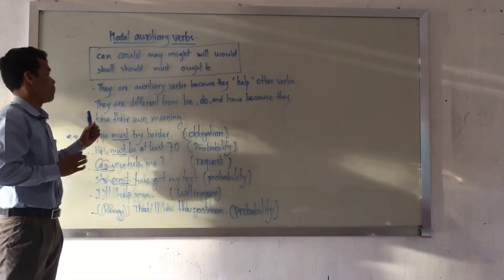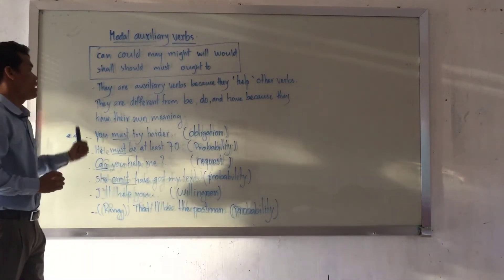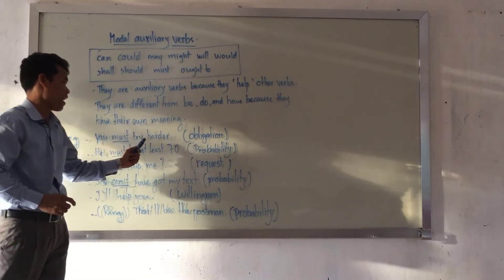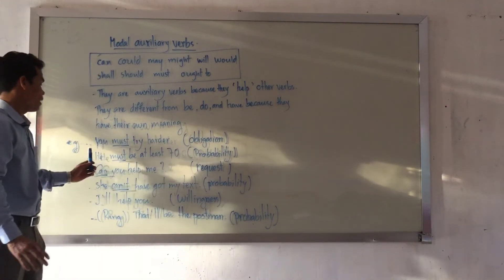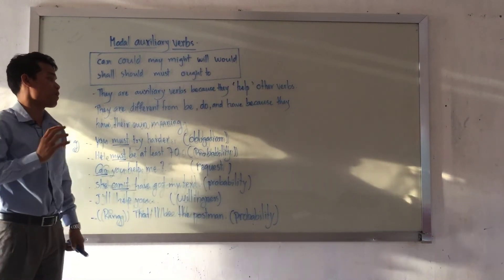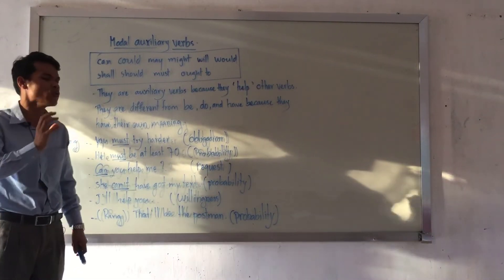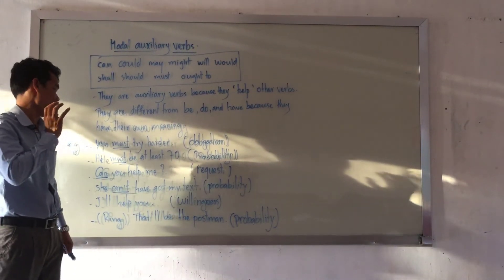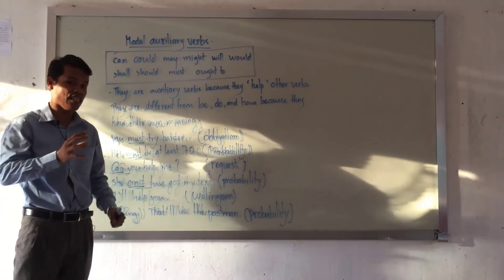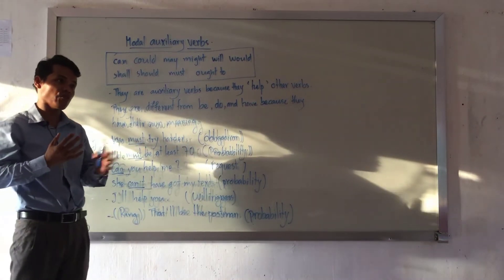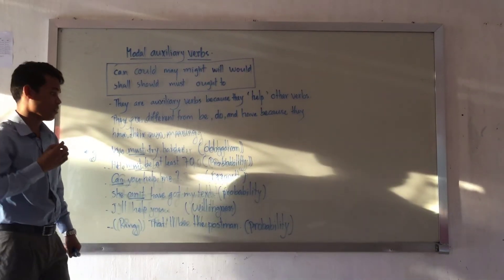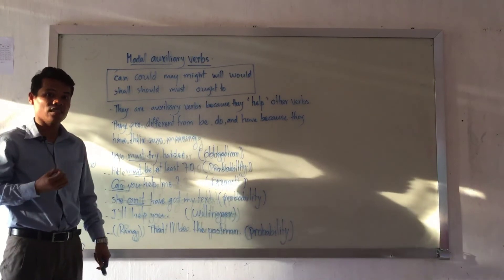When we use modal auxiliary verbs, they can be added before the main verb, and they have their own meaning. 'You must try harder' refers to obligation. 'He must be at least 70' is not obligation but probability — you are not sure exactly how old he is, so you say he must be at least 70. You have some evidence, but it is not 100% certain. It is only your deduction — a logical deduction.